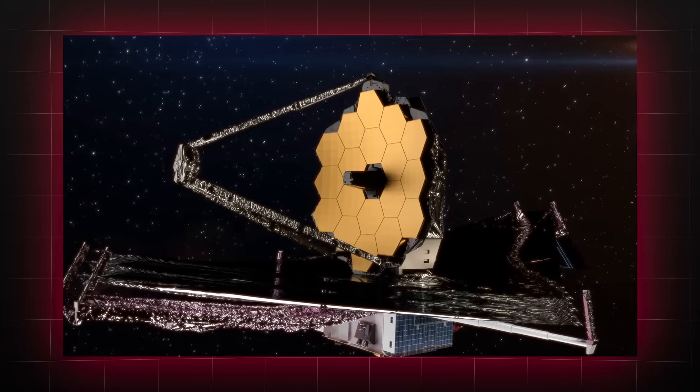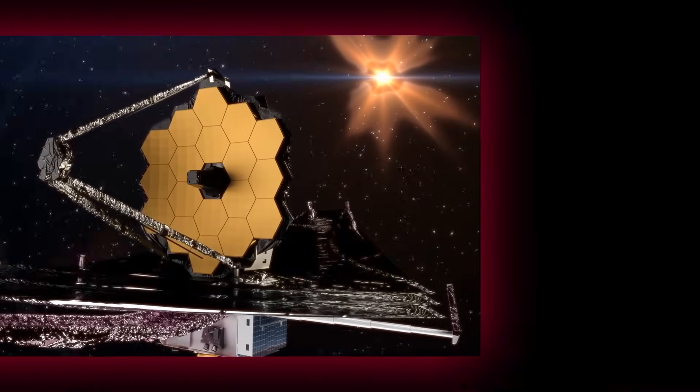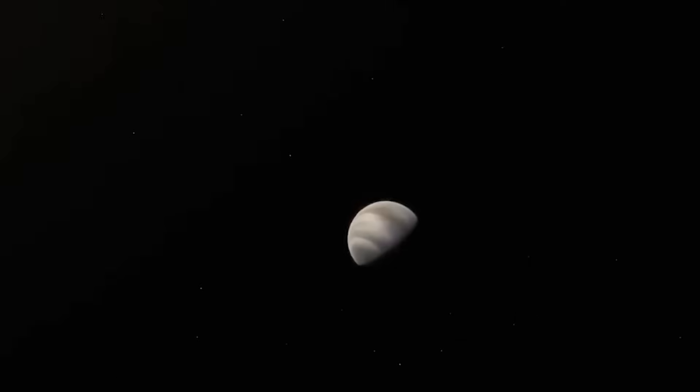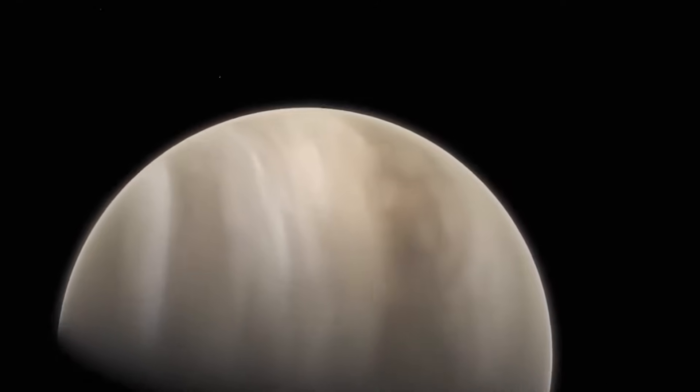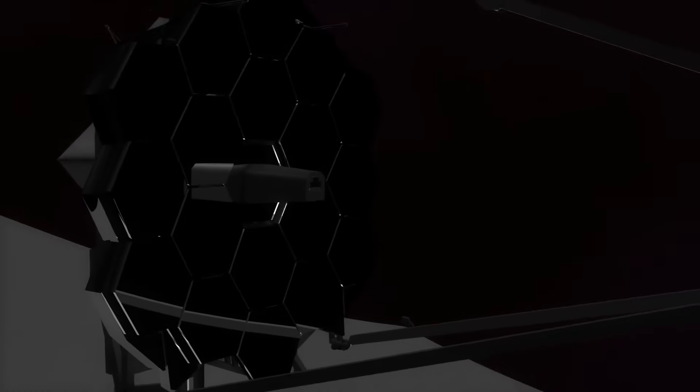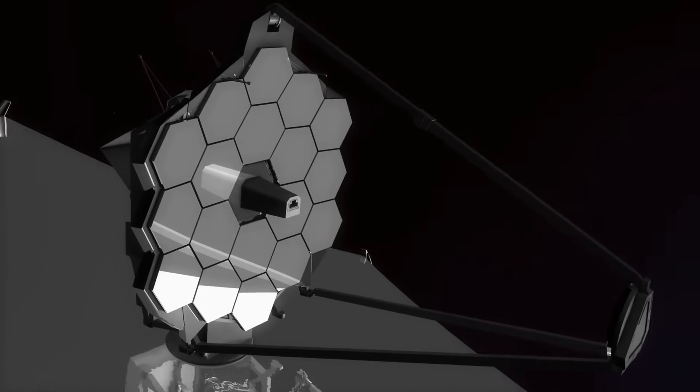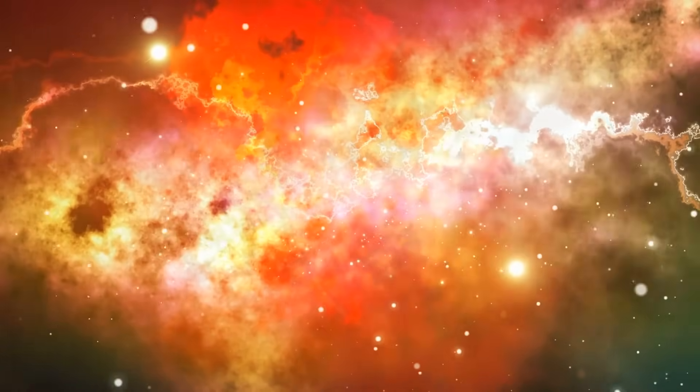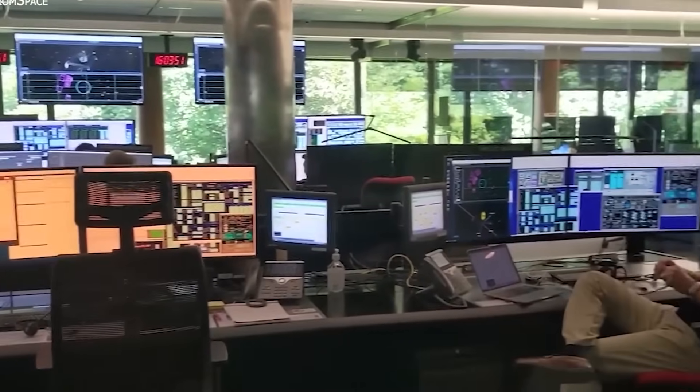James Webb has proven particularly adept at observing distant large galaxies, so much so that it identified its first exoplanet, LHS 475 b, in the early months of 2023. This planet, located 41 light-years away, has a diameter similar to that of Earth. According to NASA, James Webb is the only operational telescope capable of analyzing the atmospheres of Earth-sized exoplanets. The results of this discovery highlight the telescope's extraordinary precision, opening new horizons of exploration for astronomers.